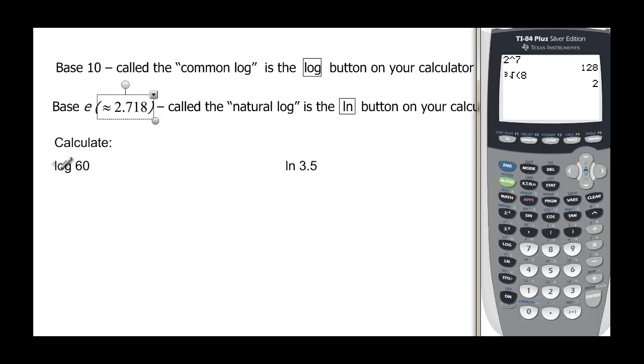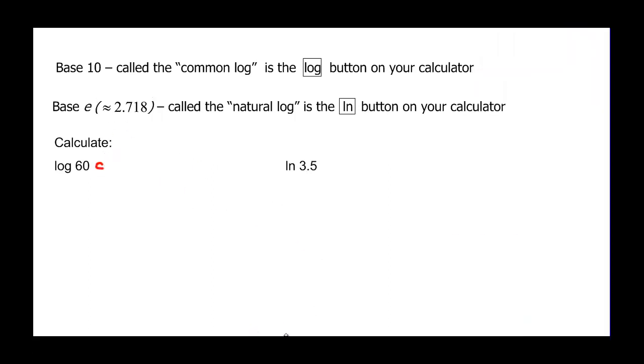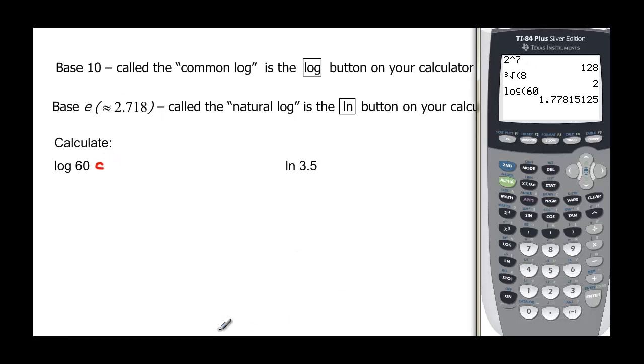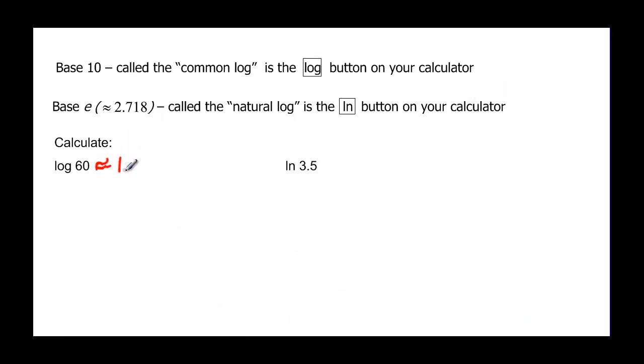And so we can just calculate these right from our calculator. Log 60. Notice there's no subscript down here, because we know it's base 10. So just log in our calculator, and then 60. And log 60 is equal to, I lost it, 1.78 approximately. So approximately 1.78.